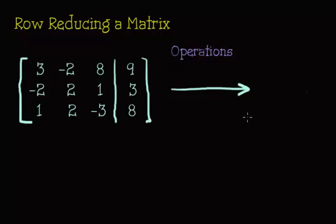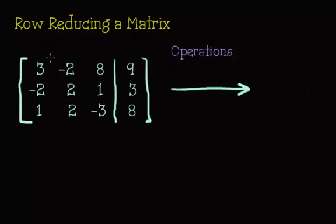Welcome back to our series on systems of equations. In the previous video we learned about row operations and reducing, and now we are actually going to completely row reduce this augmented matrix to get our final answer. The upside of row reducing is that you do a couple operations and you're going to be able to solve a very large system, much like this one where we have three variables x, y, and z.